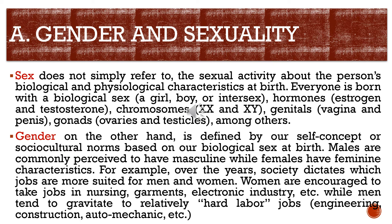So let's talk about gender and sexuality. Let us define first what is sex. Sex does not simply refer to sexual activity but about a person's biological and physiological characteristics of birth. Everyone is born with a biological sex — a girl, boy, or intersex. Hormones such as estrogen and testosterone, chromosomes XX and XY, genitals (vagina for female and penis for male), and gonads (ovaries for female and testicles for male), among others.